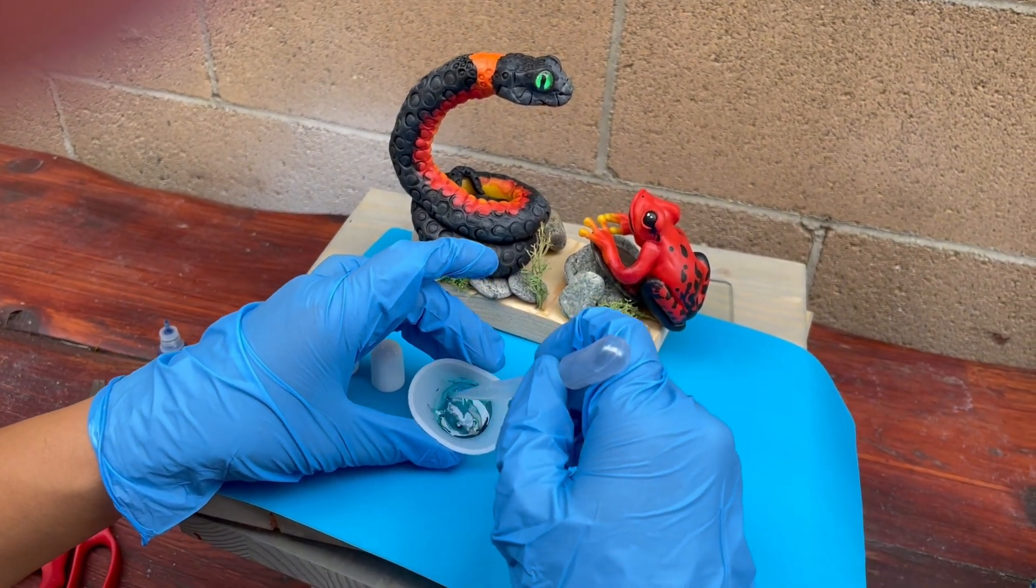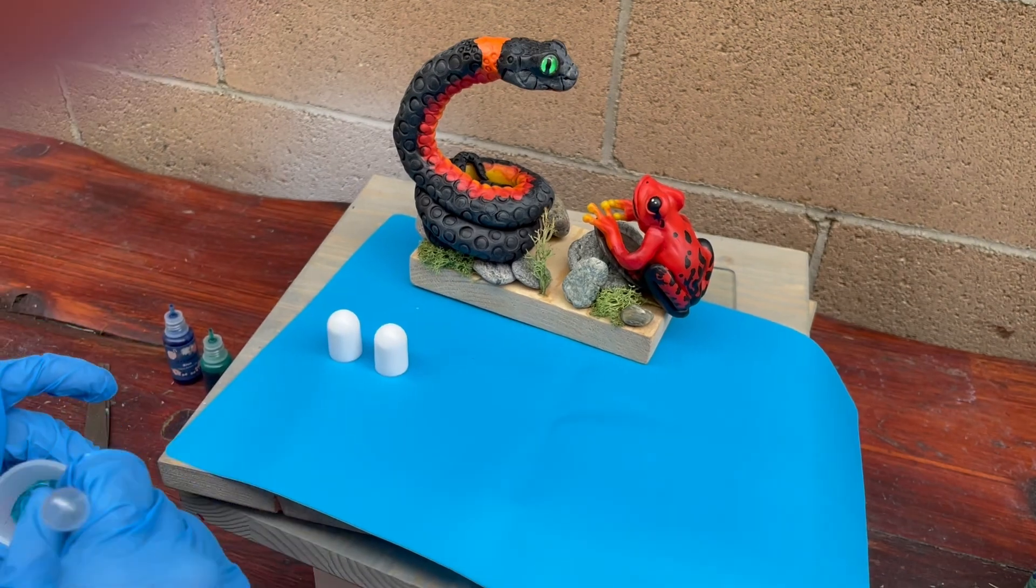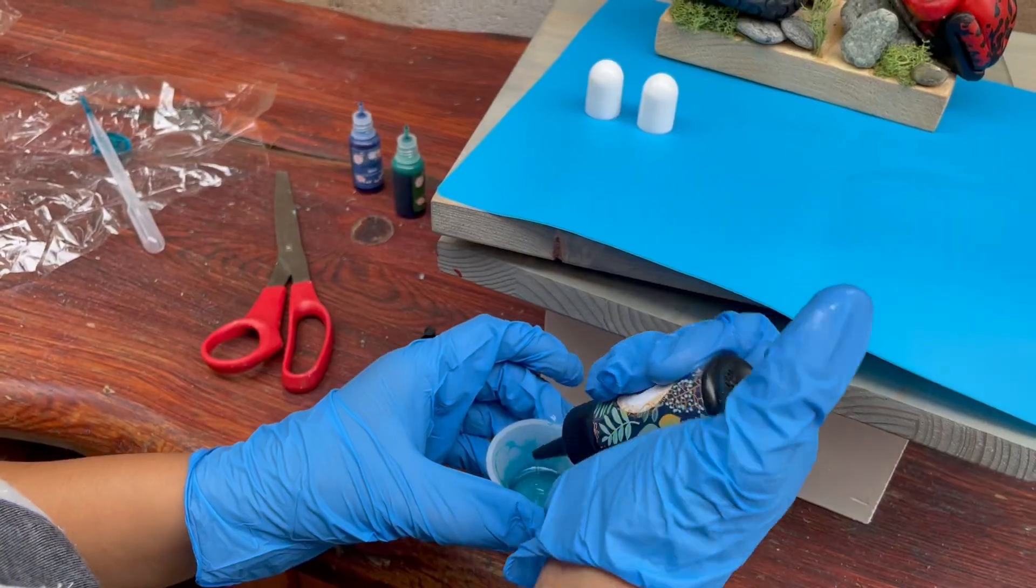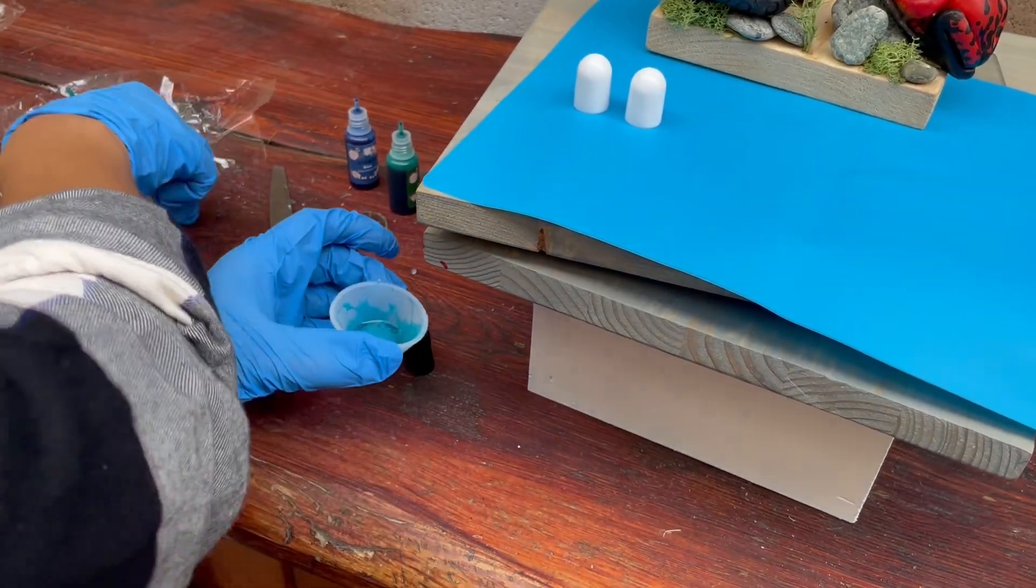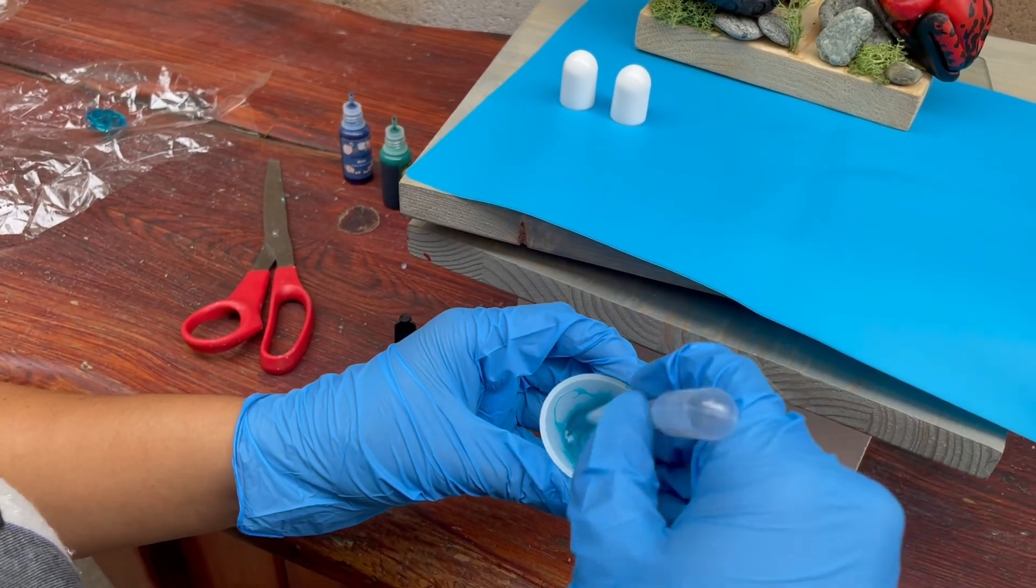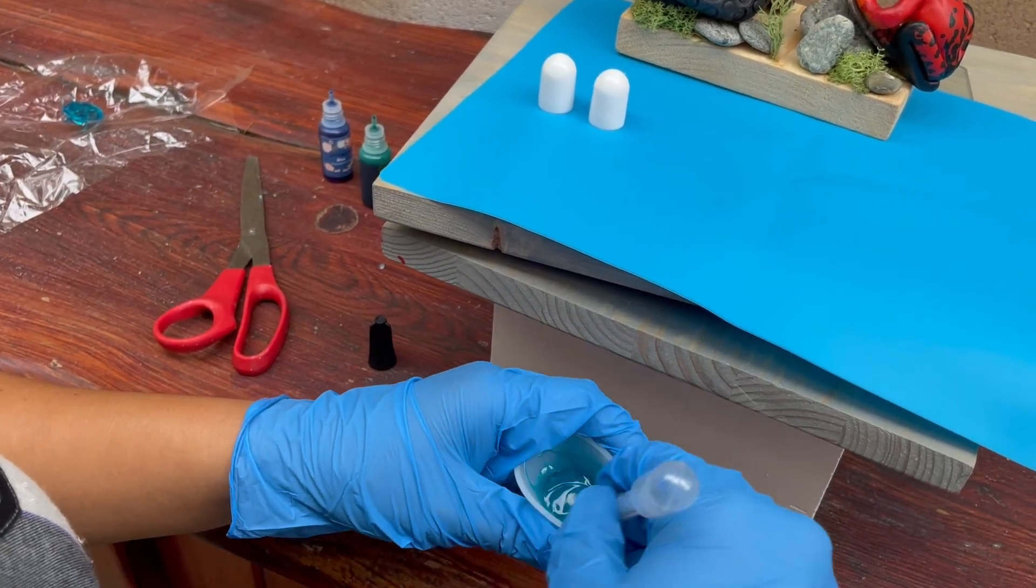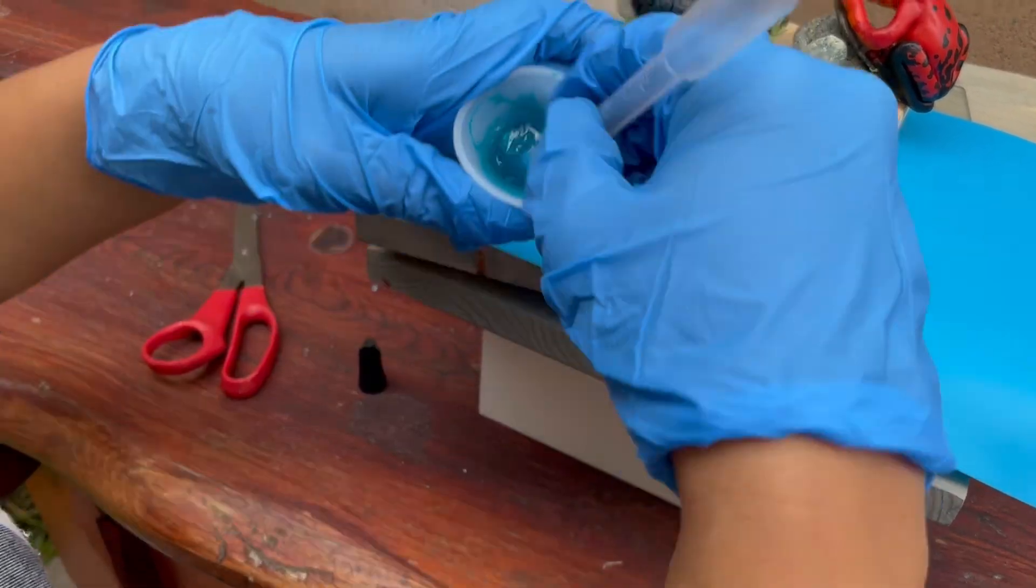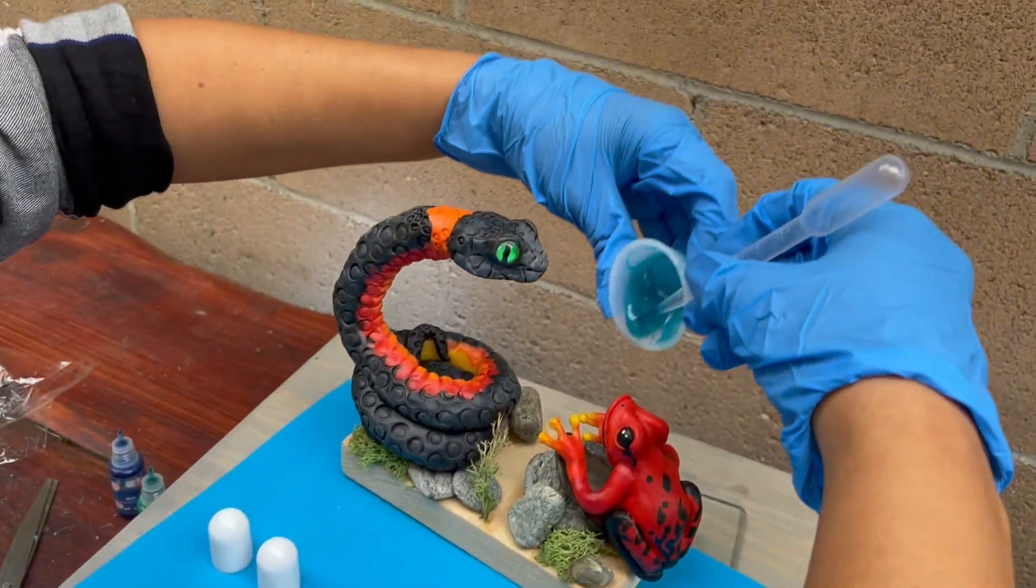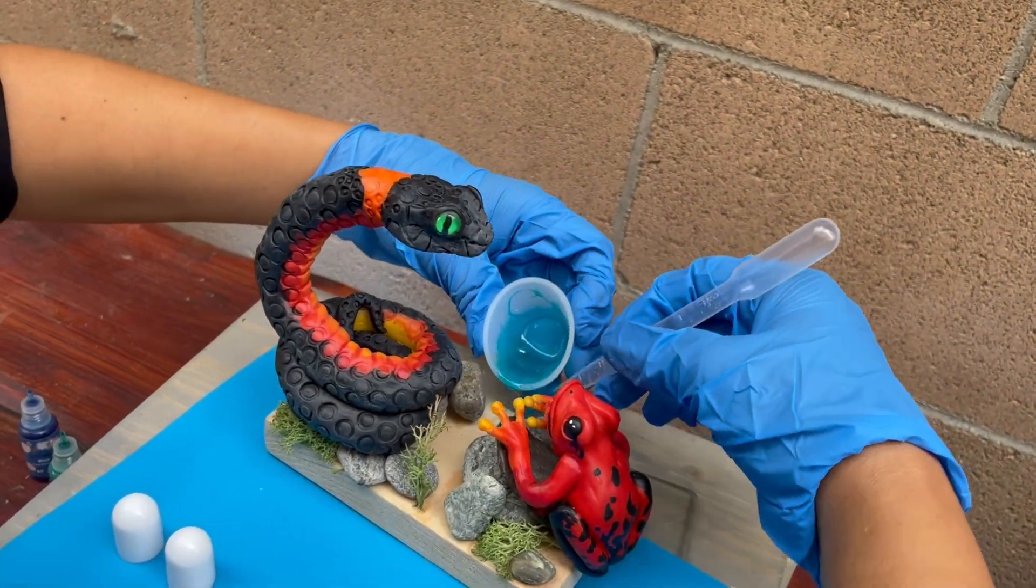Whoa, it's already starting to harden. More resin real quick since the stuff seems to be drying really fast. Mix this up. I guess the sun is already starting to dry it. And then let's just kind of pour this on.